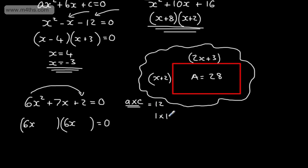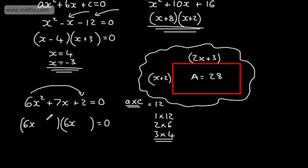So if we look: 1 times 12, 2 times 6, 3 times 4, and we're back on ourselves. We can see quite clearly it's the 3 and the 4, and they're both going to be positive. We discussed this in the last video — if the C value is positive, then we're either going to have two negatives or two positives. So what I'm going to do is insert plus 3 and plus 4 into the brackets. At this stage, we simply factor these two brackets.